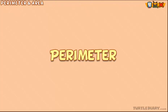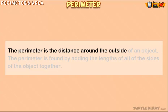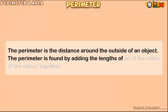Perimeter. The perimeter is the distance around the outside of an object. The perimeter is found by adding the lengths of all of the sides of the object together.